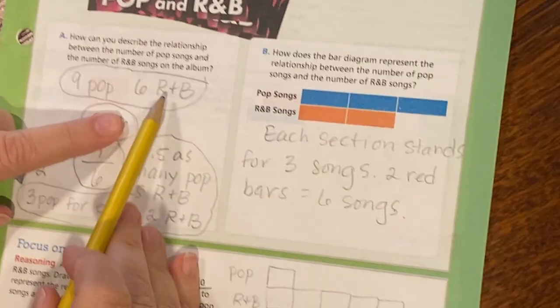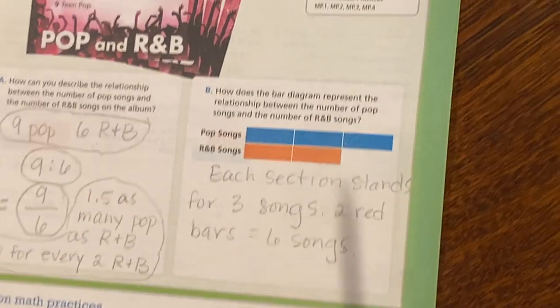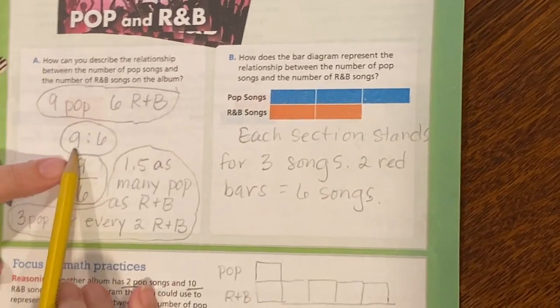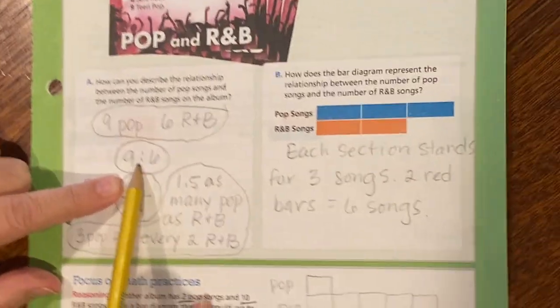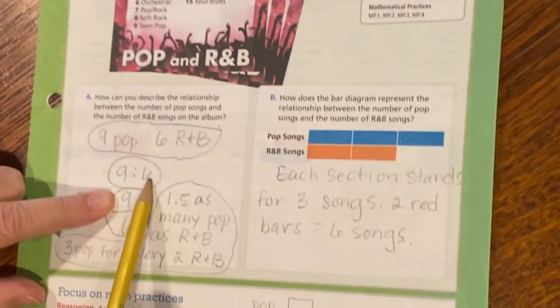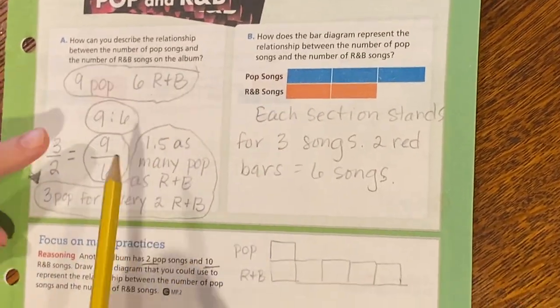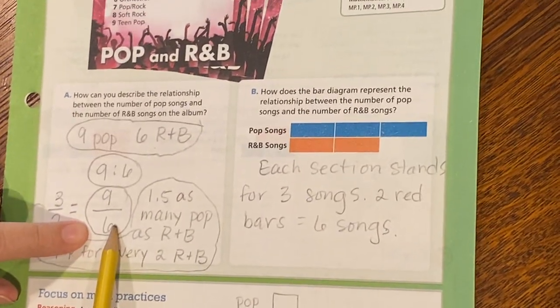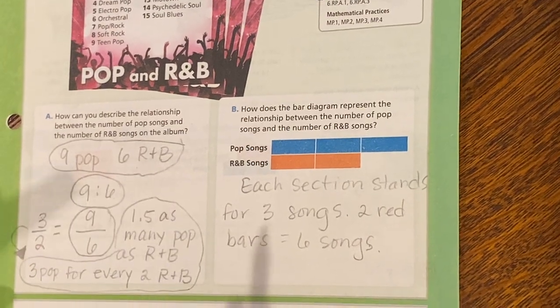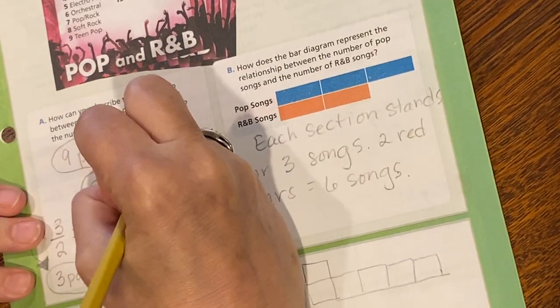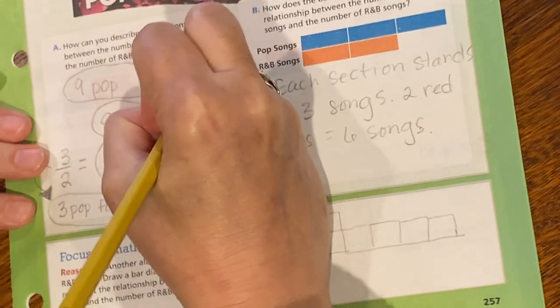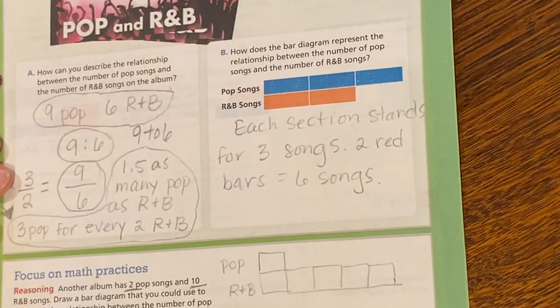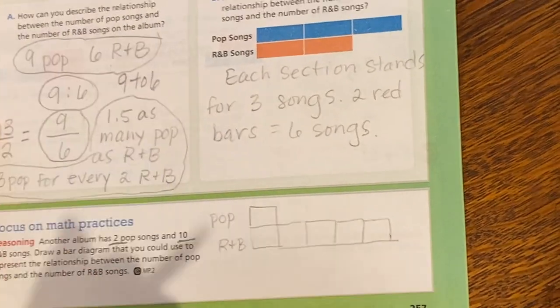So there's nine pop and six R&B. A way to express that as a ratio would be nine semicolon six, or you could express it like a fraction — nine over six — or you could write it in words like this: nine to six. Those are three perfectly acceptable ways of expressing a ratio.